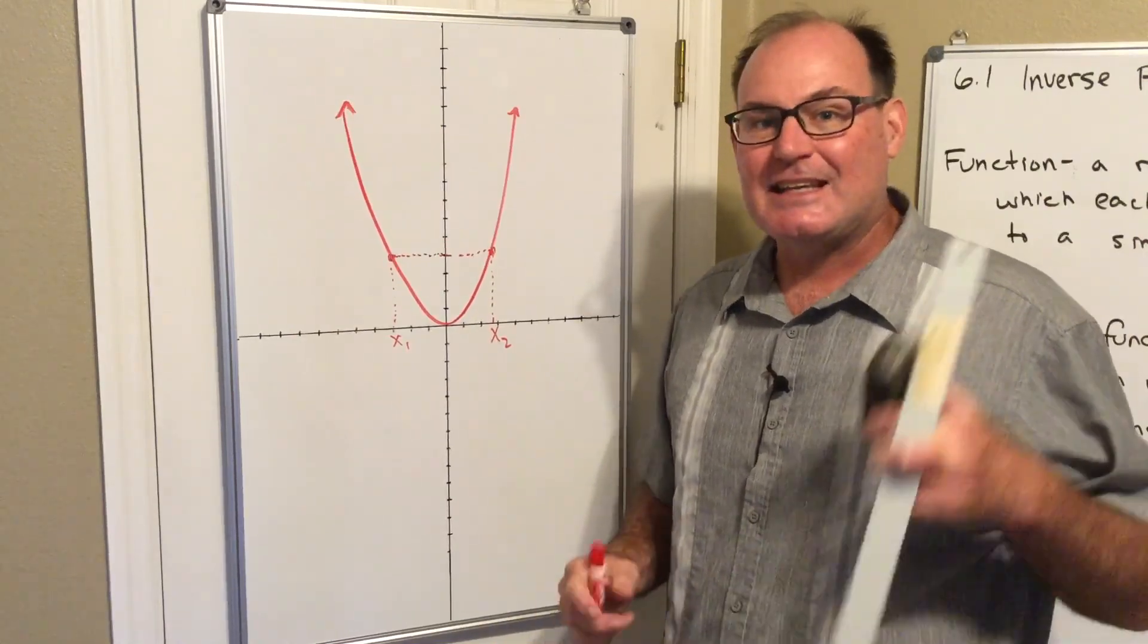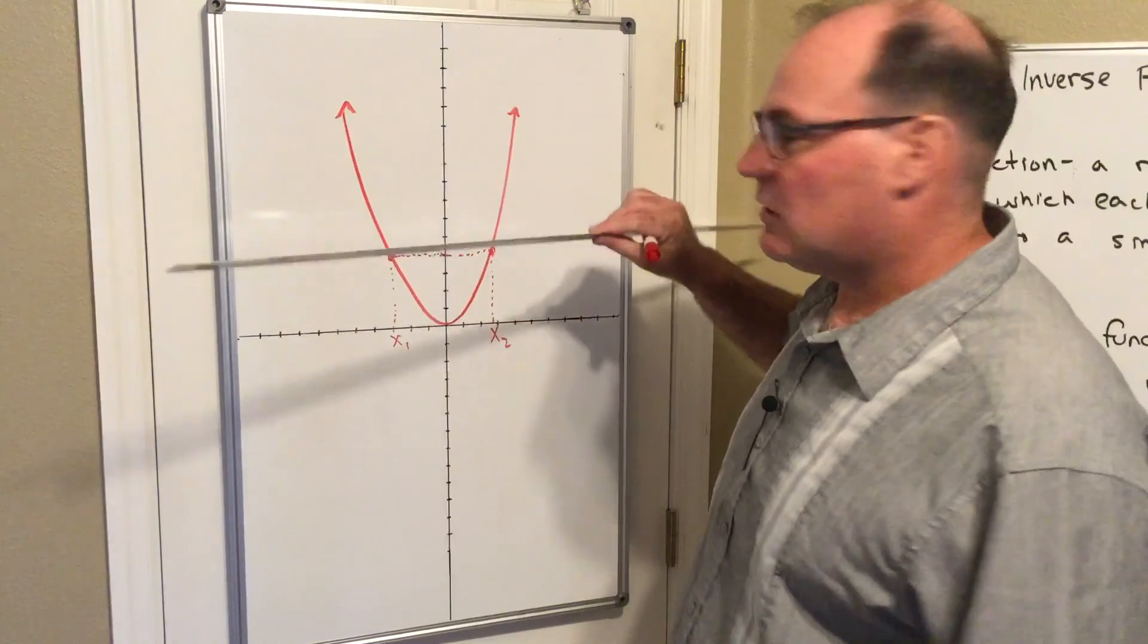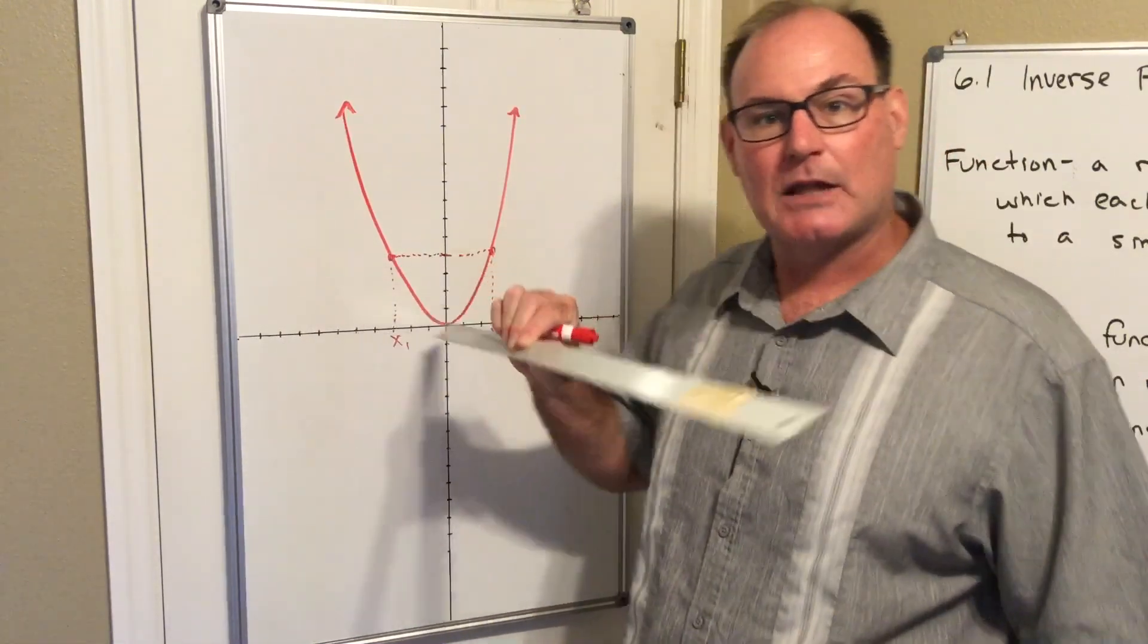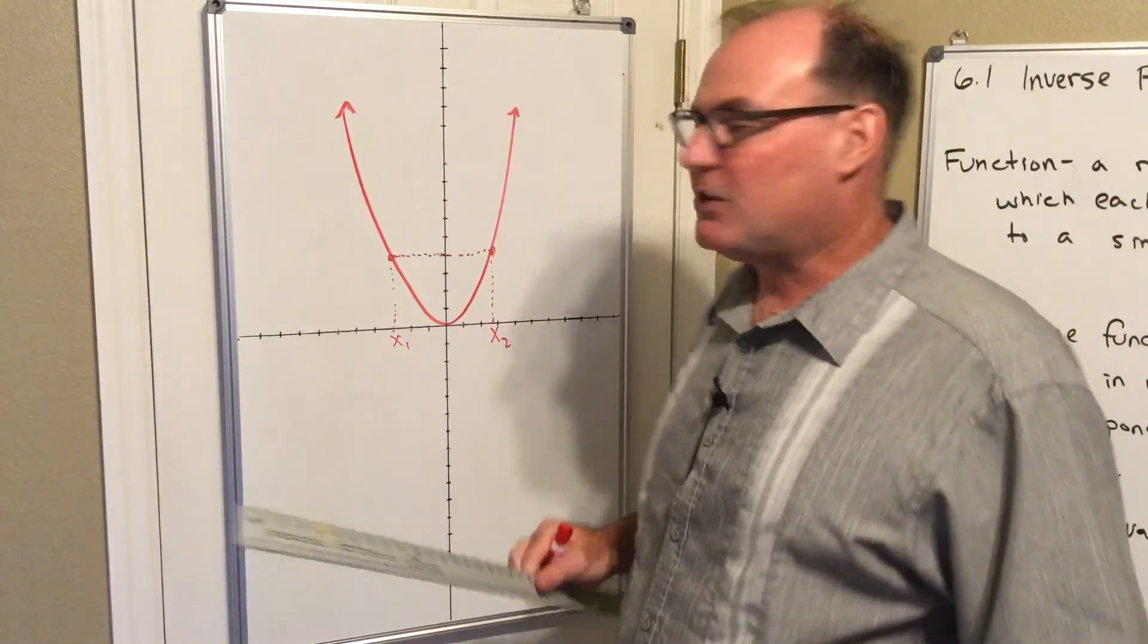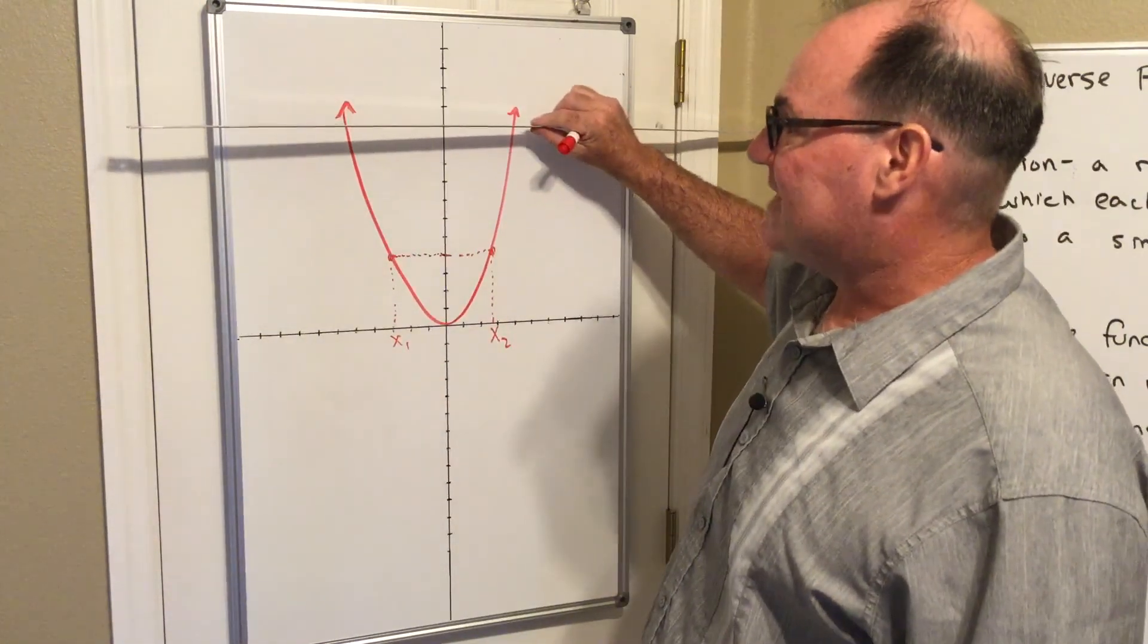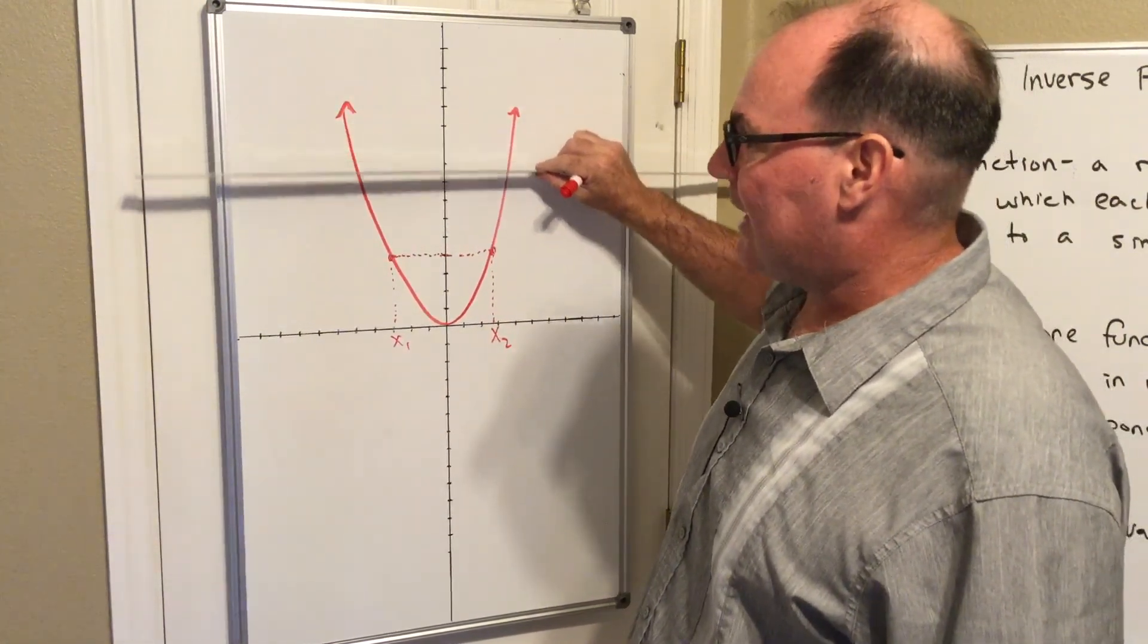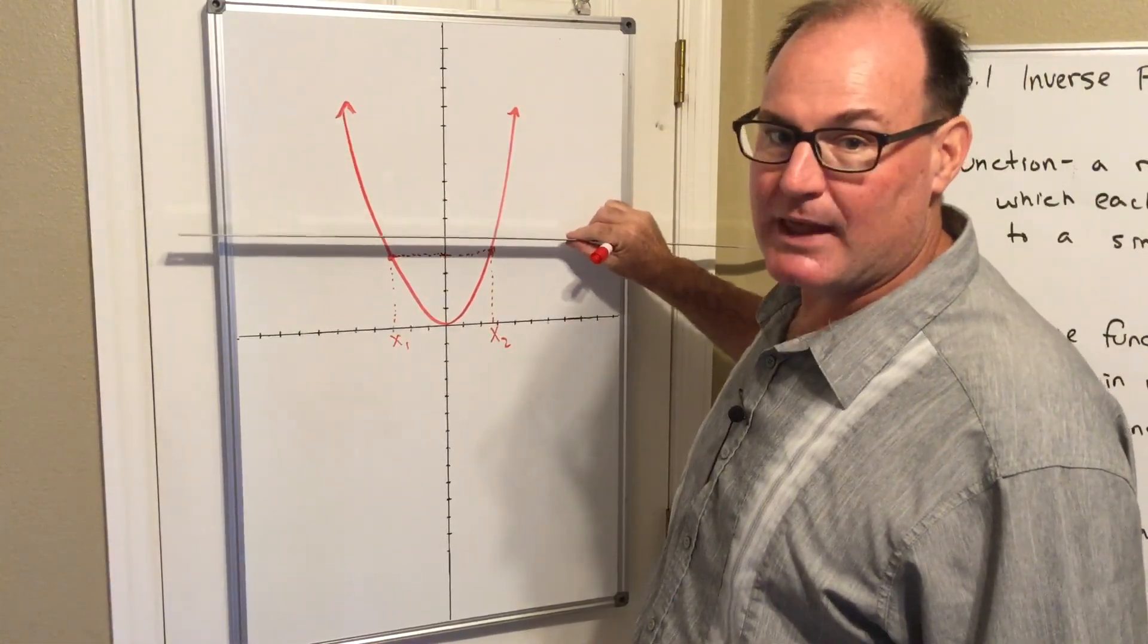Now, the quick, easy, clean test for a graph is to use what's called the horizontal line test. So once you know something's a function, to determine if it's one-to-one, you use the horizontal line test. And notice, the horizontal line passes through my parabola more than one place.